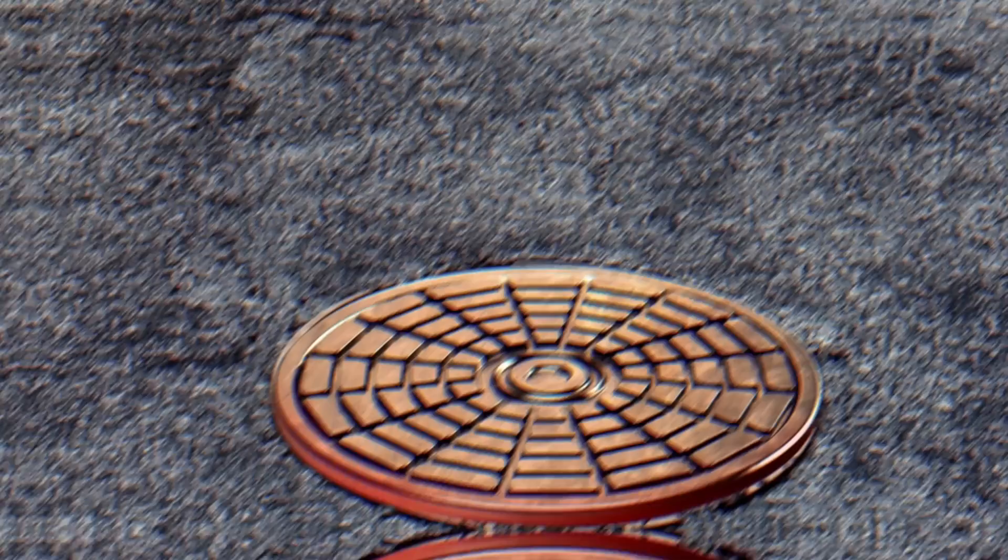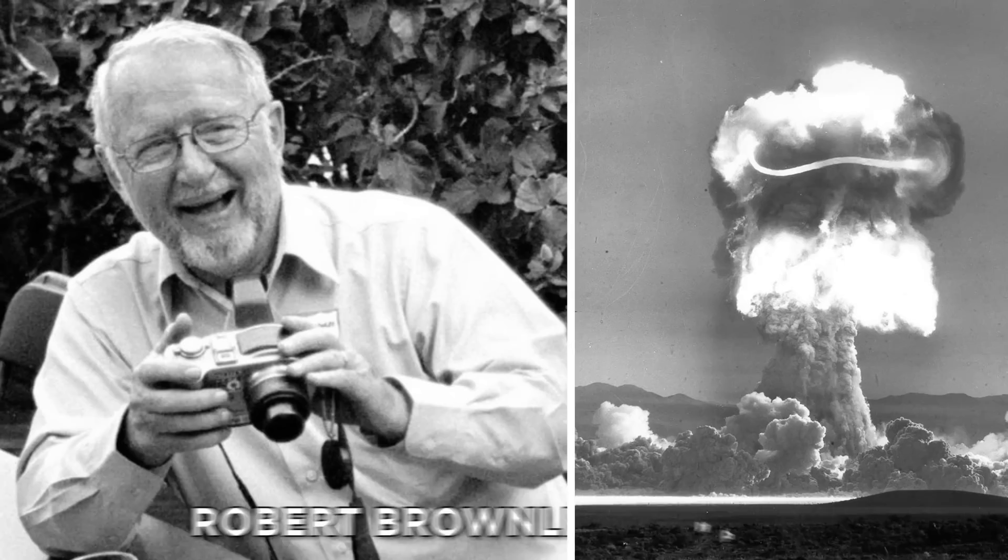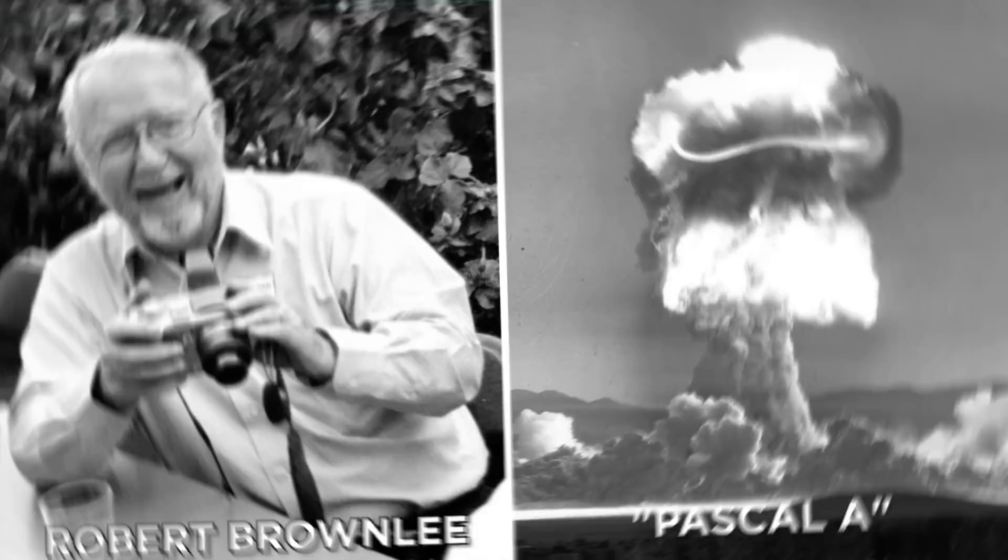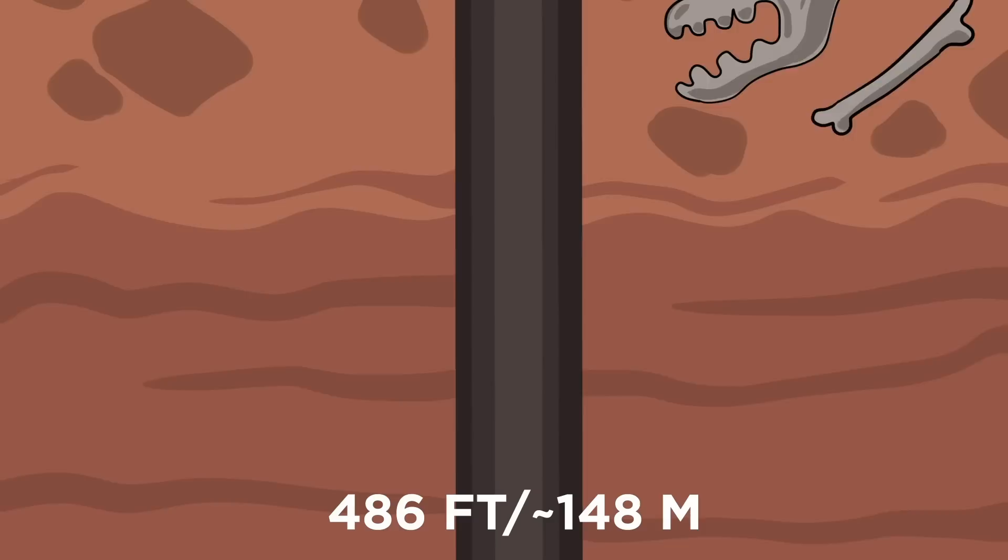The manhole in question didn't just grow legs and start sprinting like Usain Bolt. It was exploded into space. On July 26, 1957, astrophysicist Robert Brownlee designed the Pascal A bomb test to contain nuclear fallout. The bomb was placed at the bottom of a hollow column which was three foot wide, 486 feet deep, and sealed with a four-inch thick iron cap.